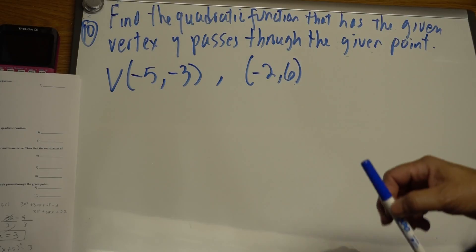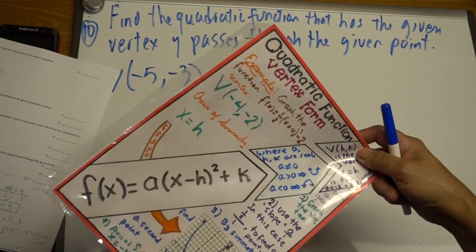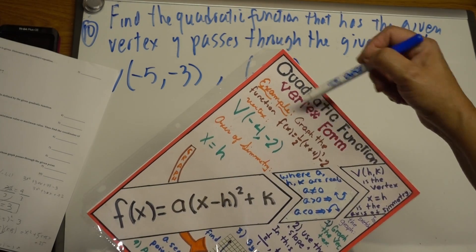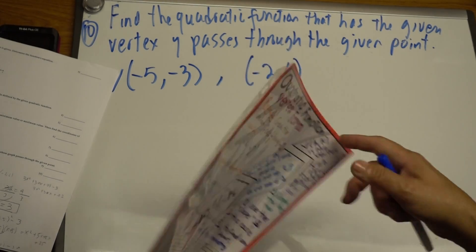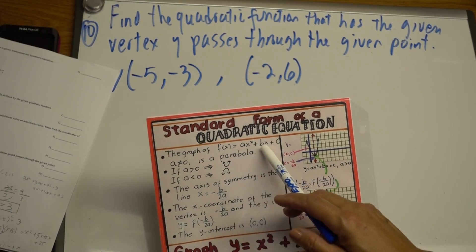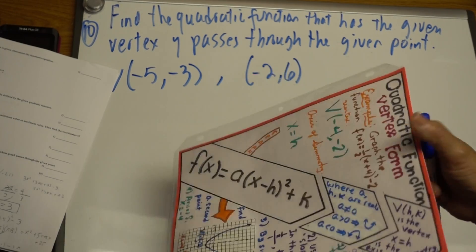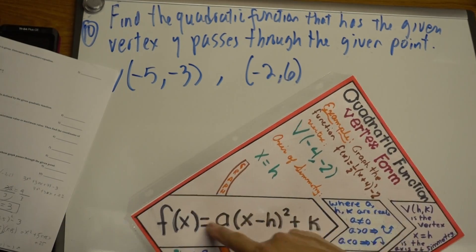Since they give you the vertex, the formula that is more convenient for you to use is the vertex form, which is this one right here. This one is in standard form. You don't have access to insert the vertex here, but in this one you do. So we're going to use this formula.